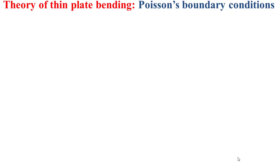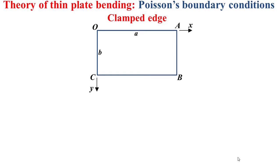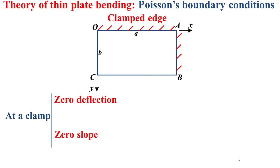I will now explain the Poisson's boundary conditions, starting with the first one: the clamped edge. I consider a plate depicted in blue, in the plane defined by the directions x and y. The length of the plate is a and the width is b. I consider a clamp at the edge AB defined by the direction x equal to a, and another clamp at the edge OA defined by y equal to zero. At a clamp, we have zero deflection and zero slope — that is the fundamental idea for a clamped edge.